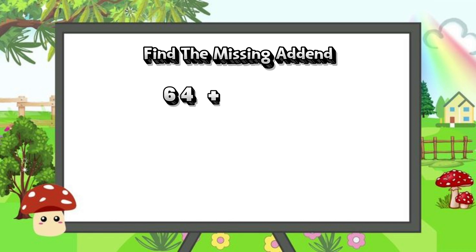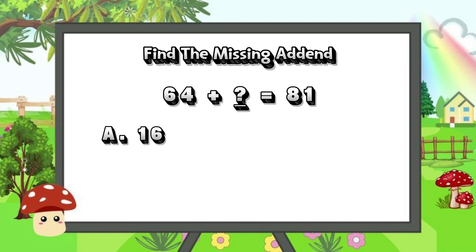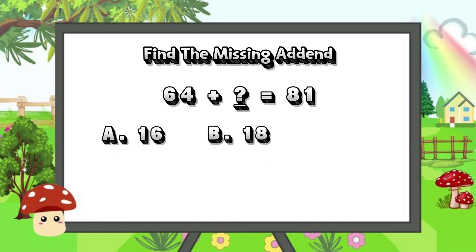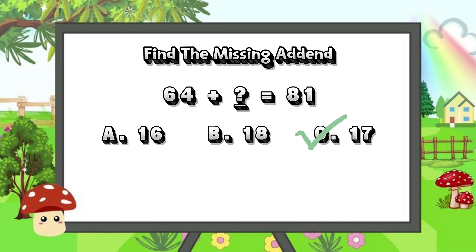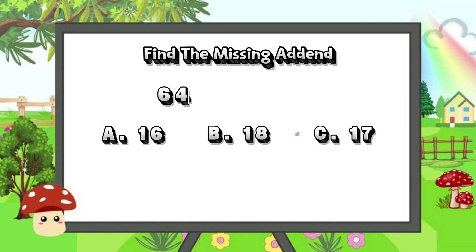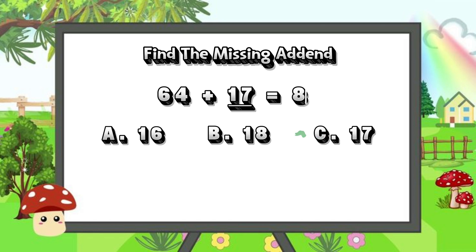Find the missing addend. 64 plus blank is equals to 81. Is it letter A, 16? Letter B, 18? Or is it letter C, 17? And the right answer is letter C, 17. 64 plus 17 is equals to 81.